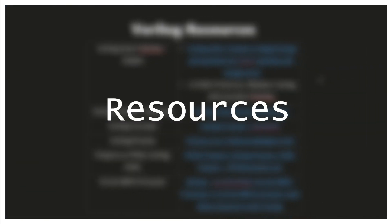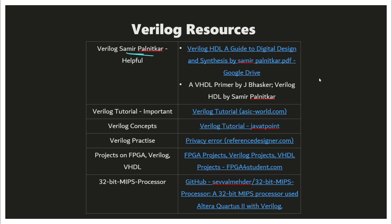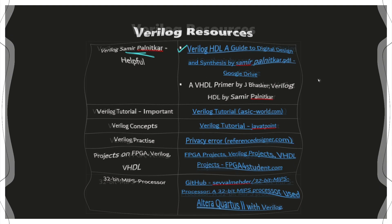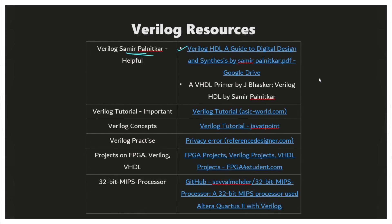Coming to the resources for Verilog, the Samir Palnetkar book — Verilog HDL: A Guide to Digital Design and Synthesis — is very useful. You can download it online. There is also another book, A VHDL Primer by Jay Baskar and Samir Palnetkar. This should be sufficient. There are more resources; you can also refer to the ASIC World Verilog tutorials, which are also useful.